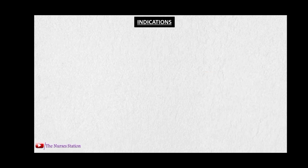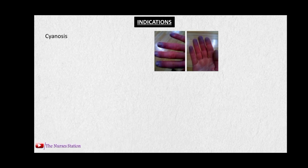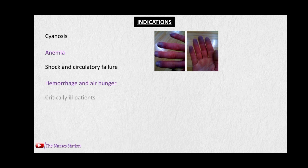The indications for oxygen therapy or the administration of supplemental oxygen include cyanosis, which is the bluish discoloration of the mucous membranes and nail beds due to low levels of oxygen in the blood, anemia, shock and circulatory failure, hemorrhage and air hunger, critically ill patients, asphyxia, and breathlessness.